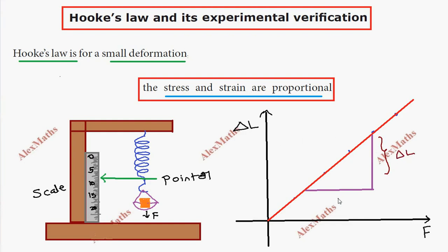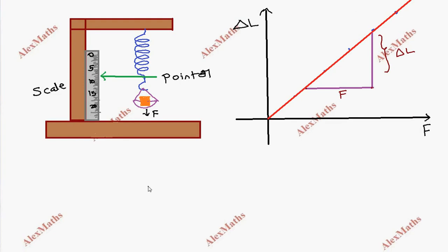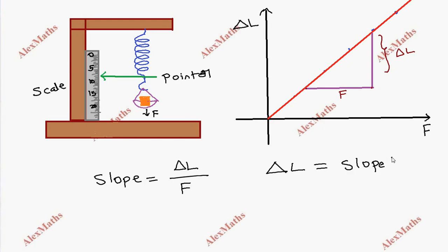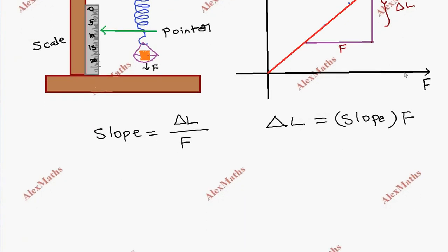From the straight line graph, we can find the slope. The slope is equal to the vertical distance divided by the horizontal distance, which is (y2 − y1) / (x2 − x1). Here y2 − y1 is delta L and x2 − x1 is F. So: delta L = slope × F.